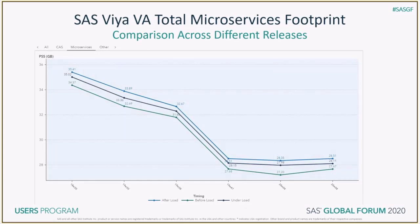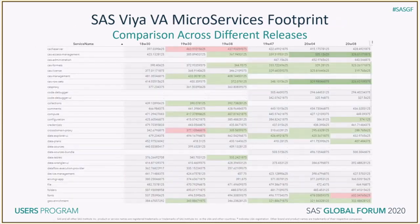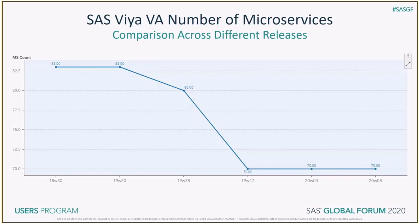This slide shows the total microservice footprint. It has a similar trend as the total footprint; however, it is about 3 GB less than the total footprint. The report on this next slide shows the individual memory footprint, where the rows are microservices and the columns are deployments. The numbers in the table are the memory footprint in megabytes — you may notice that all of them are about 300 megabytes. The next chart shows the number of microservices over the course of several Viya releases. We had 83 microservices at Viya 3.4, and that number was reduced to 70 at the Viya 3.5 release, due to the merging of microservices.